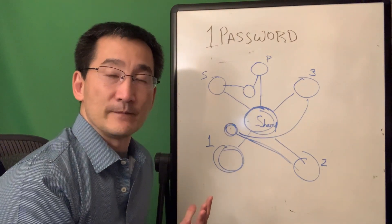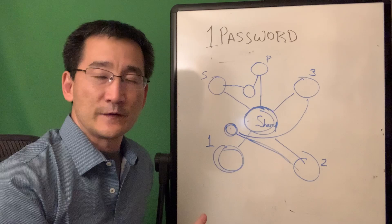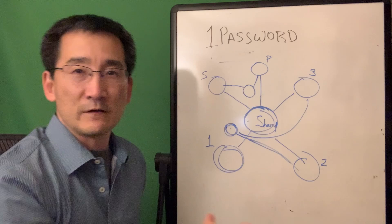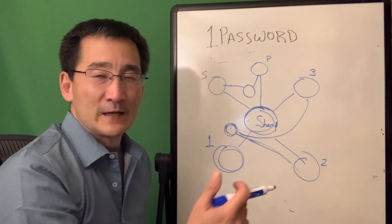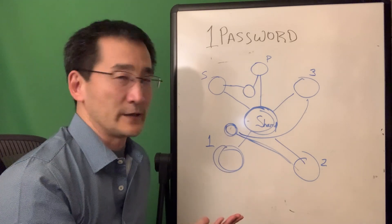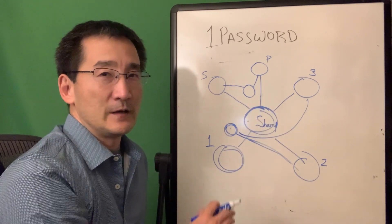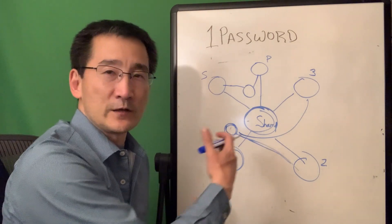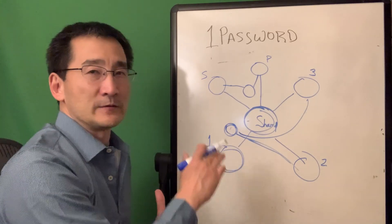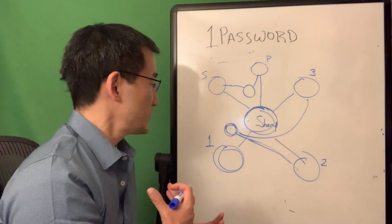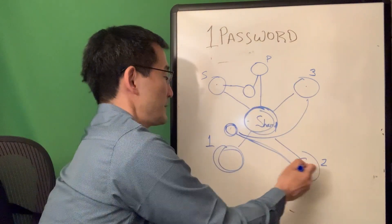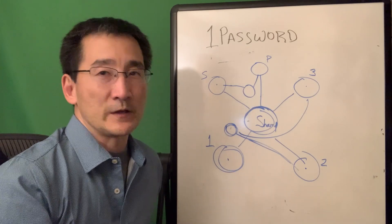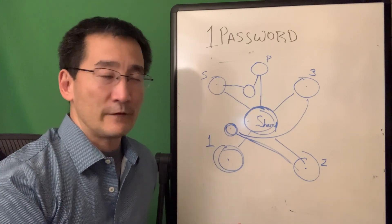Basically, everyone can create multiple vaults and share them however they want. There's the main shared vault, which the primary could take away access to for certain people if they wanted to, but it's set up by default. This private vault that everybody gets — nobody else can see that. I don't believe you can share it with anybody. That's just your private vault. If you want to share stuff, you put it into the shared vault.